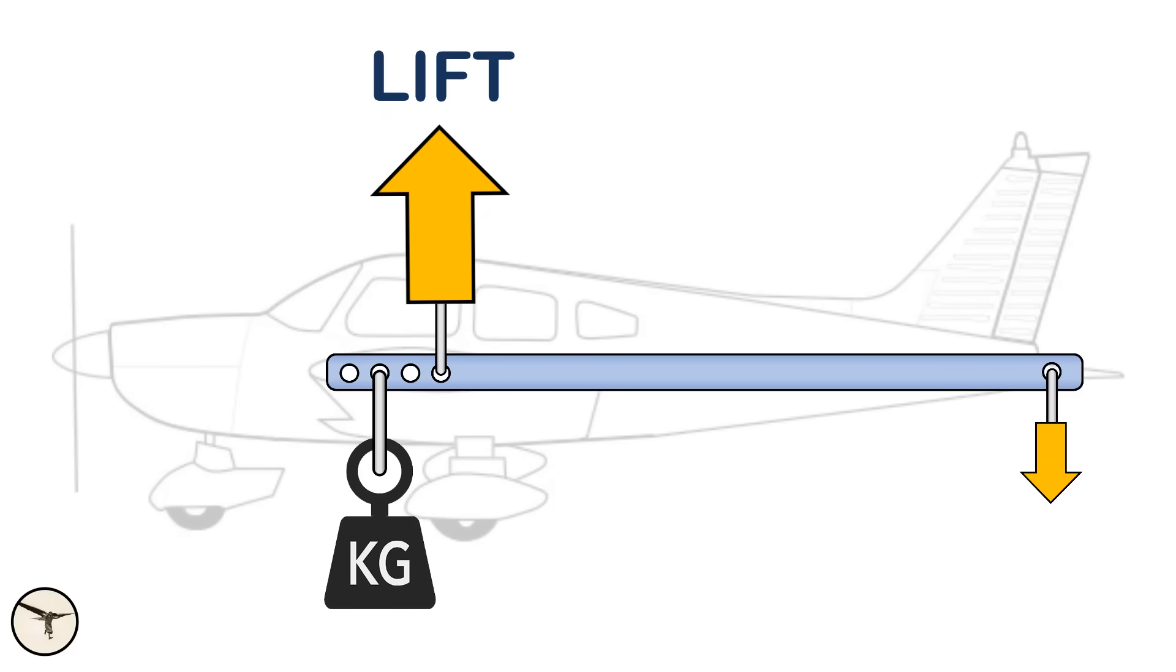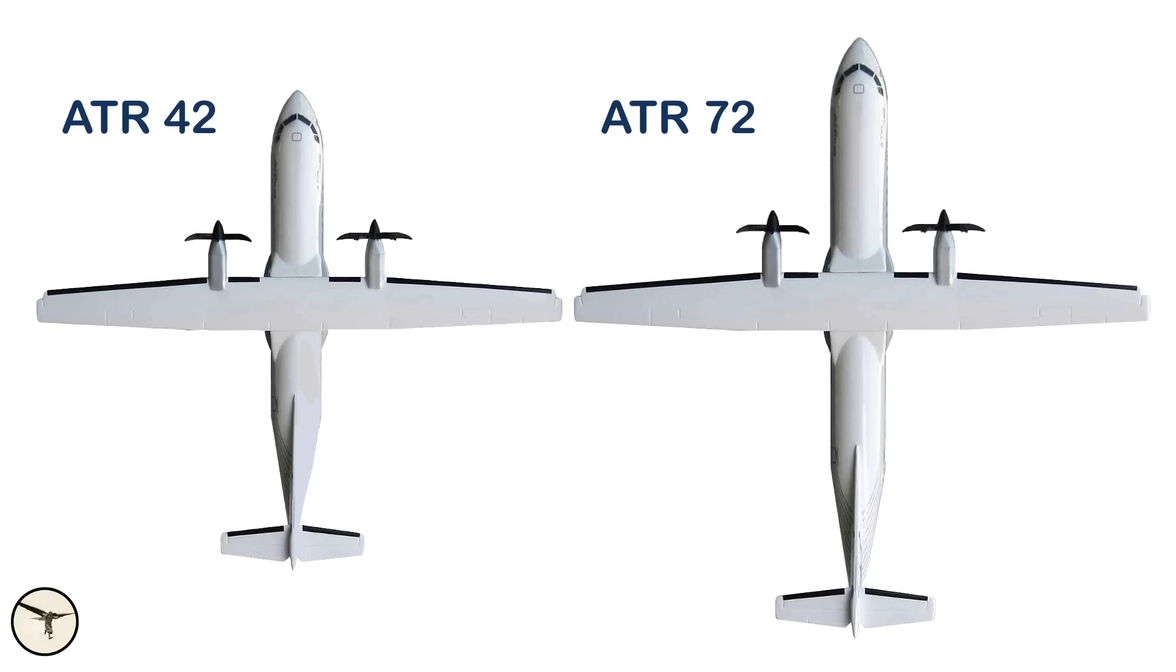And the distance between the center of gravity and the horizontal stabilizer is also important for stability. And in that case, the ATR-72 is more stable than the ATR-42, right?